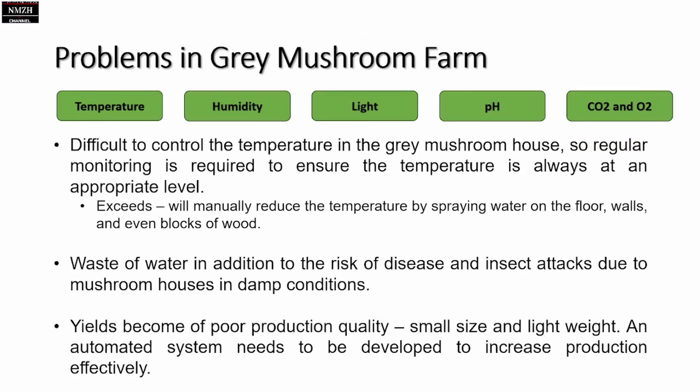There are five factors in gray mushroom farming systems, which are temperature, humidity, light, pH, and air — including carbon dioxide and oxygen.